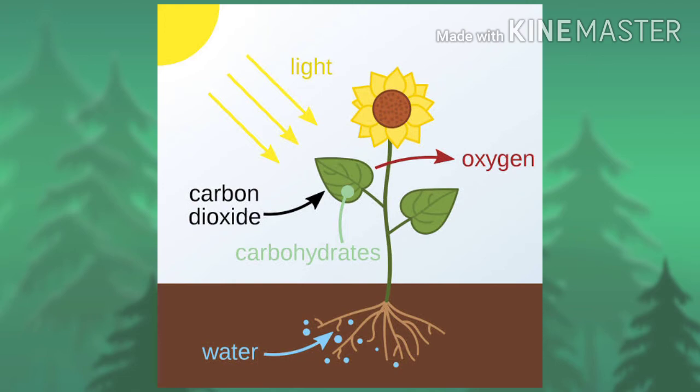Leaves use carbon dioxide gas and water to prepare food in the form of carbohydrate. And oxygen gas is released in this process.